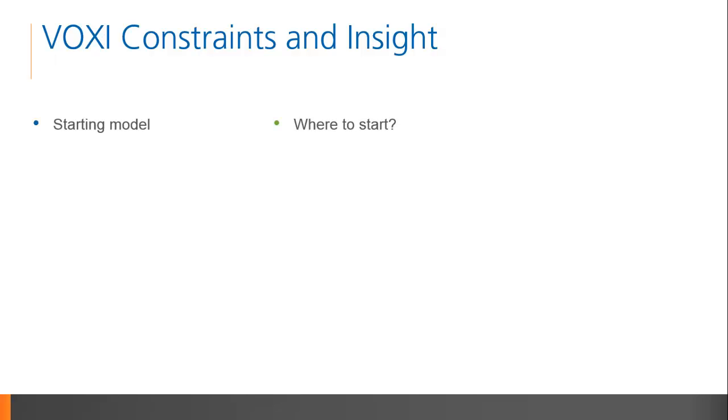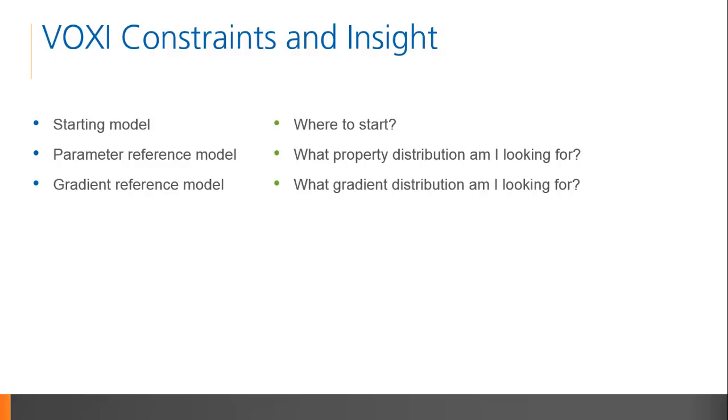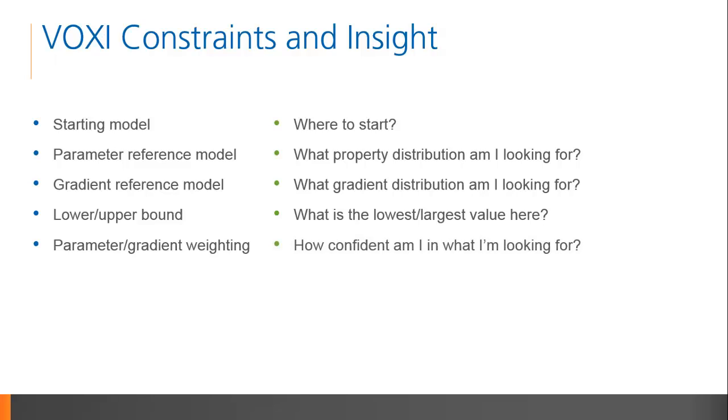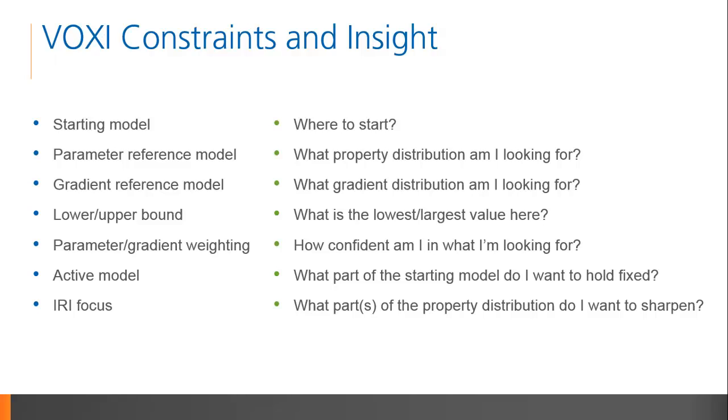To recap, the starting model is used to give the inversion algorithm a place to start. If it is well chosen, it can improve the speed of the inversion. The parameter reference model helps guide the inversion toward the expectant distribution. The gradient reference model helps guide the inversion towards a gradient distribution that you expect. Upper and lower bounds help to find limits on the rock property being modeled. Parameter and gradient weighting models specify how confident you are in the reference models. The active model constraint allows you to choose what parts of the starting model you'd like to hold fixed. An iterative reweighting inversion focusing focuses the positive and or negative ends of the property distribution to create a more compact model. Reweighting constraints can be used to influence the depth of the property distribution or to focus the gravity result using the magnetic model.